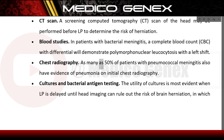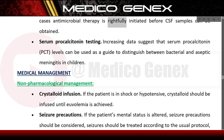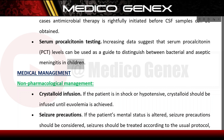As many as 50% of patients with pneumococcal meningitis also have evidence of pneumonia on initial chest radiography. Cultures and bacterial antigen testing are most useful when LP is delayed pending head imaging to rule out herniation risk, as antimicrobial therapy may be initiated before CSF samples can be obtained. Increasing data suggests that serum procalcitonin (PCT) levels can distinguish between bacterial and aseptic meningitis in children.